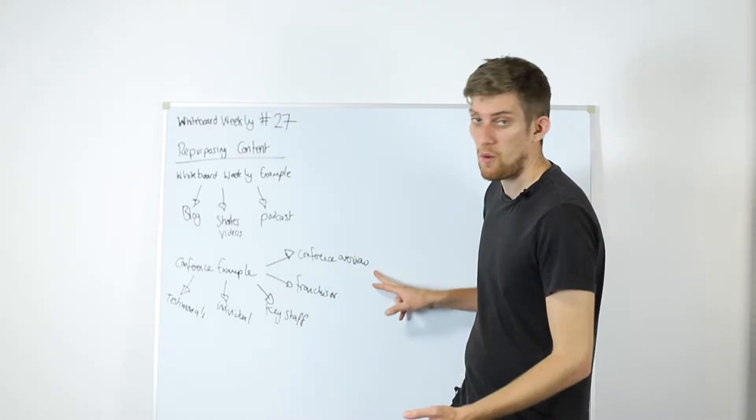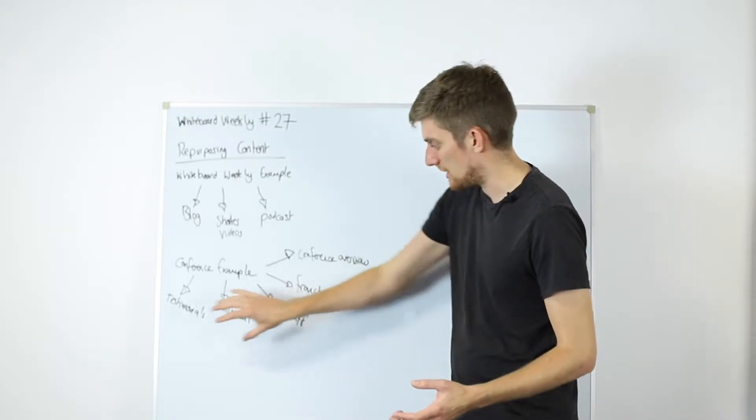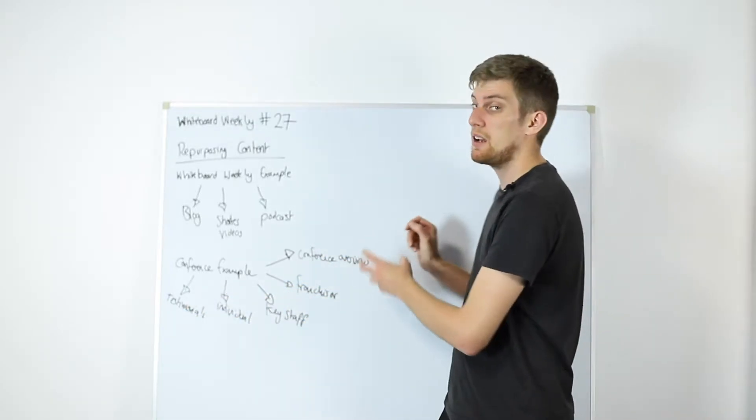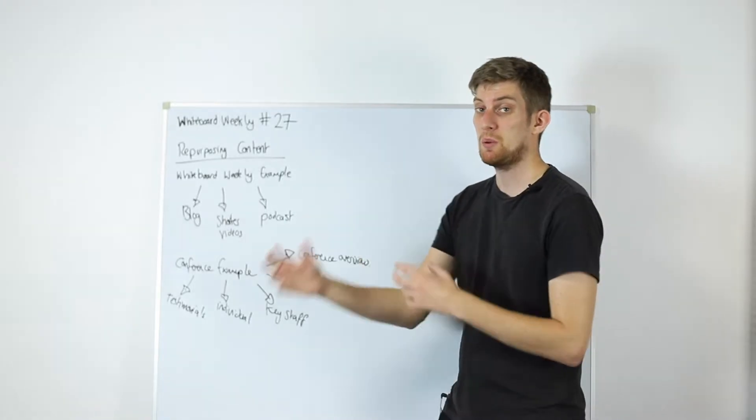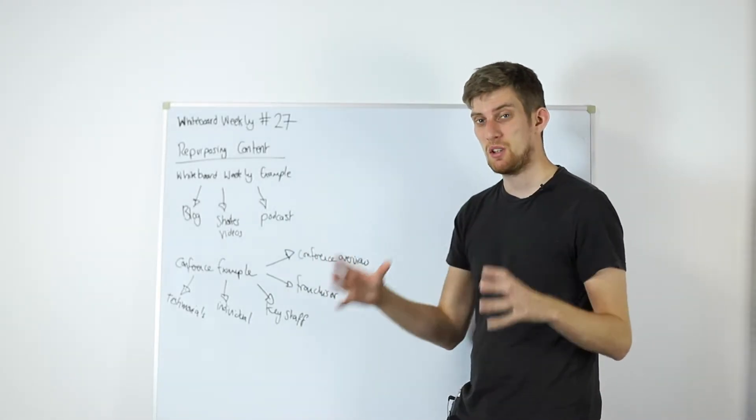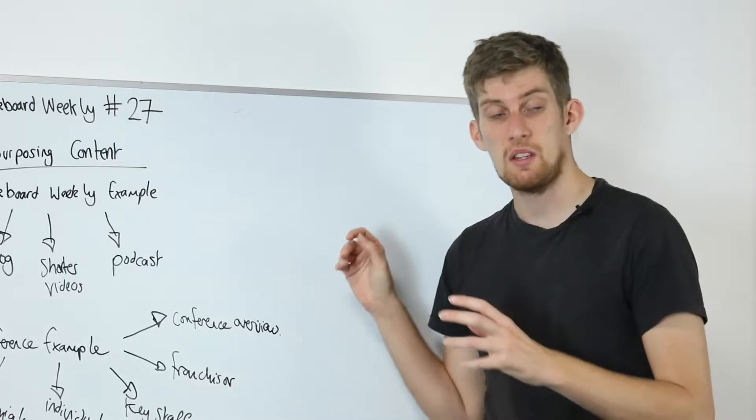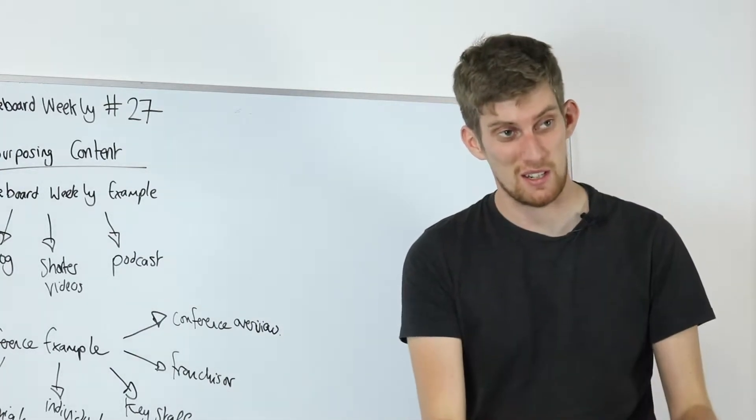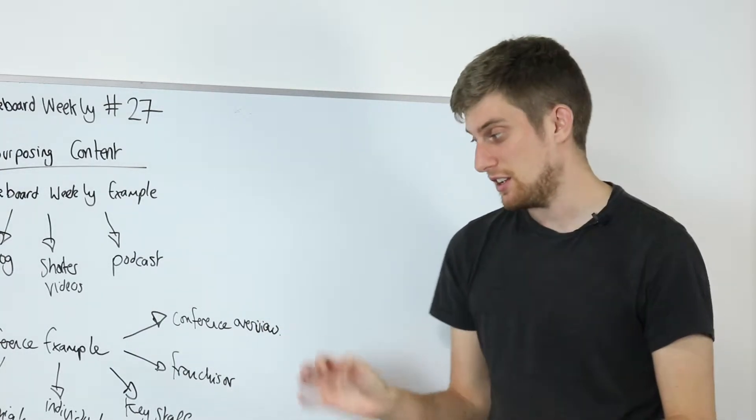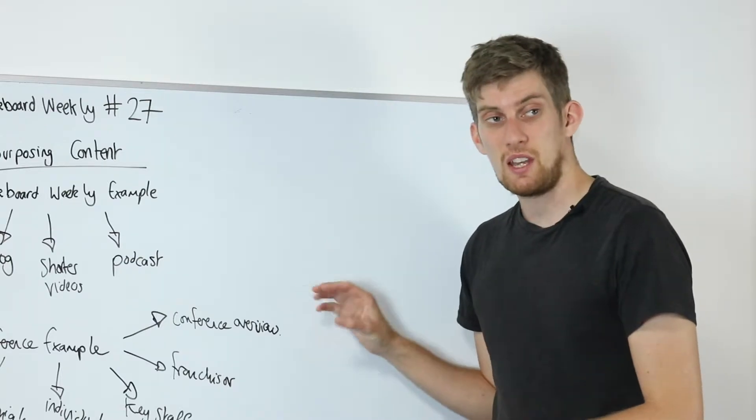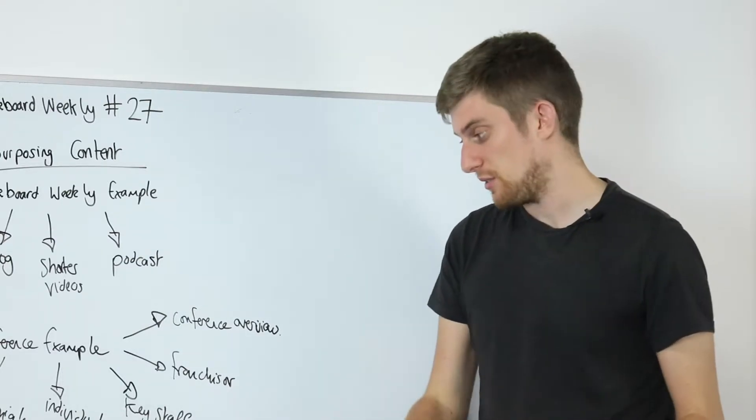And then the conference overview itself. Take clips from all these people talking, clips from the conference itself, people talking during the conference. You can make a really good solid conference video that you can use to advertise the franchise itself, the conference for next year. You can use that bit of content to promote loads of different things throughout the year.